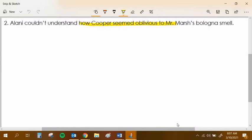So here's our noun or nominal clause. It starts off with the word 'how,' has a subject and a verb, and you can kind of hear this makes a little mini sentence: Cooper seemed oblivious to Mr. Marsh's bologna smell.